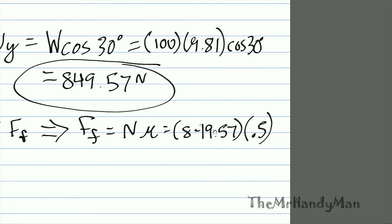So, 849.57 times 0.5, and that'll equal our friction force, which is going to be 424.79 newtons. This is an actual force that will be slowing, it's the friction portion of the total force that will be slowing this box down.